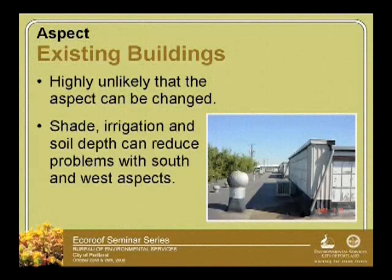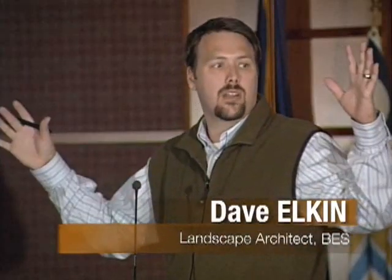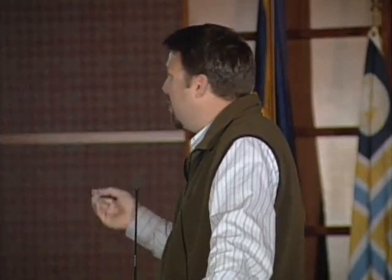On existing buildings, you have what you have in terms of aspect. What's interesting is that even on a flat roof there is shade out there — there may be a parapet wall, a mechanical space, or a penthouse that's fairly tall, which really does affect different sides of the building. You can't ignore those things. There might be a big HVAC unit that creates shade on your structure. There are also billboards — there's one just over the Hawthorne Bridge on a big flat roof, and it would be an interesting shade study to see what effect that billboard would have on an eco-roof. That covers aspect on existing buildings.